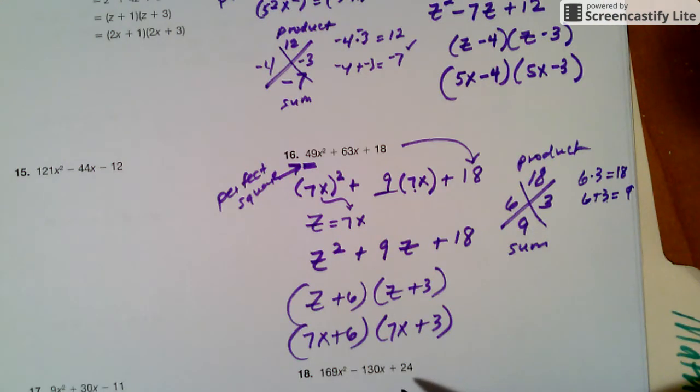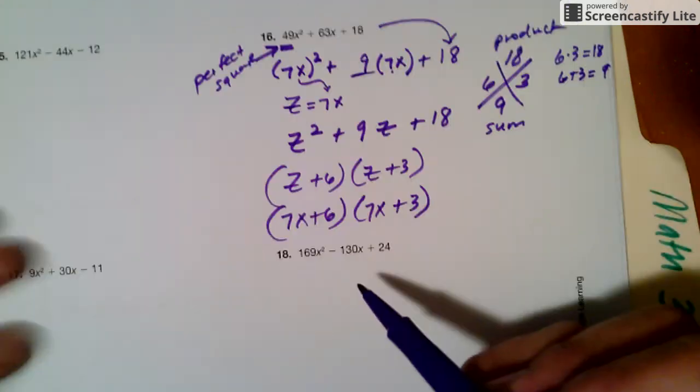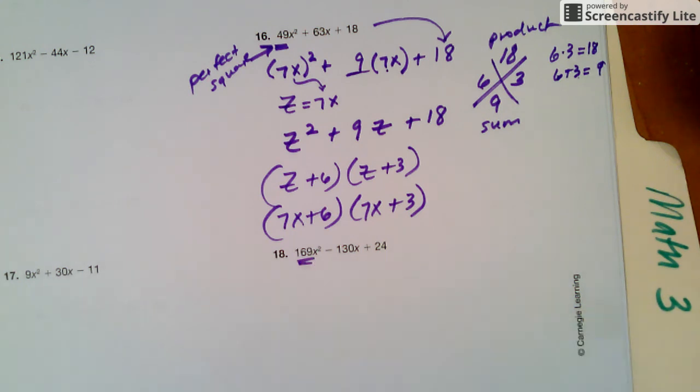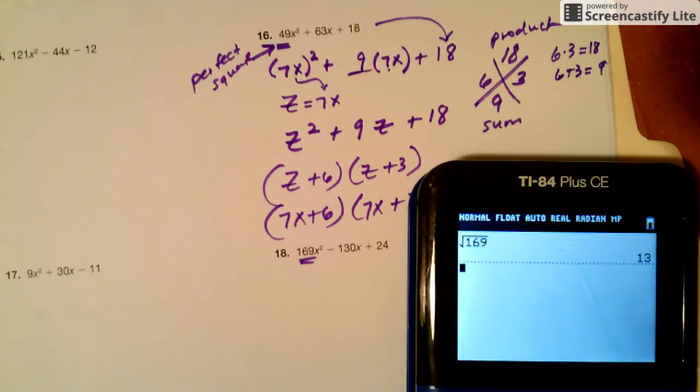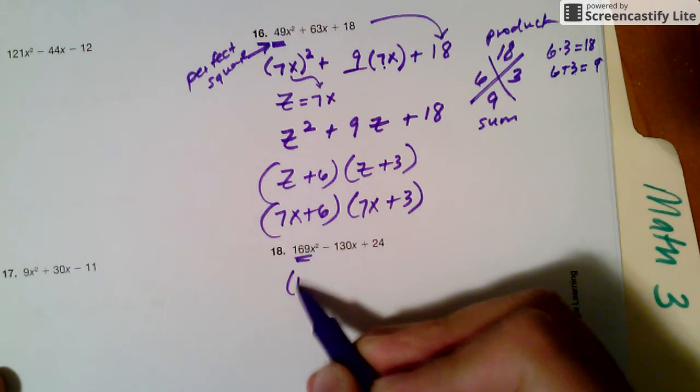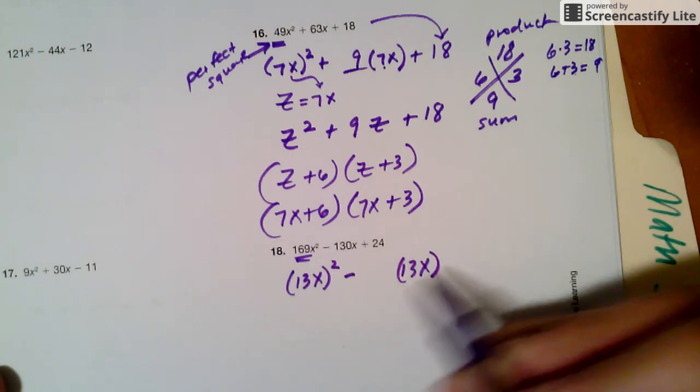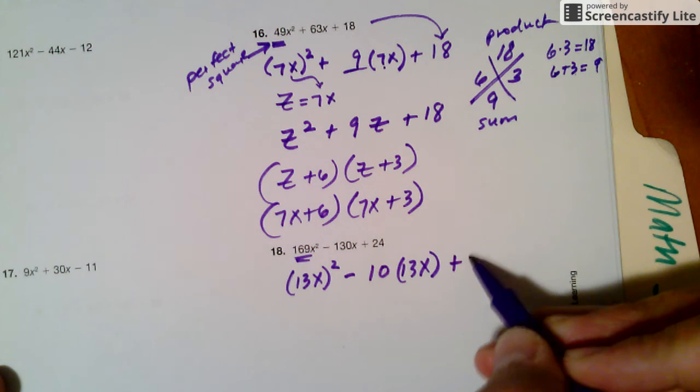So last one with the chunking method, this one, 18. If I'm looking at this again, I'm going to look at this. 169, that's a perfect square number. If you don't know, you can try to square root it, take the square root of it and see if it actually square roots nicely. So I can do square root, second square root, 169. It actually is 13 times 13. So I'm going to rewrite this. I'm going to chunk it. I'm going to say 13x square. And then I want to see that appear again over here. So I'm going to say 13x. 13 times what is 130? 13 times 10 is 130. And then I have my plus 24 over here.